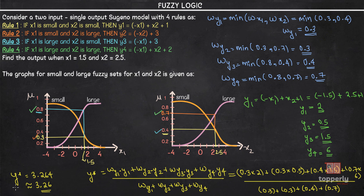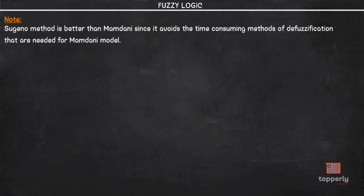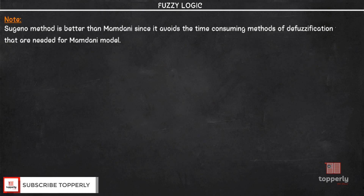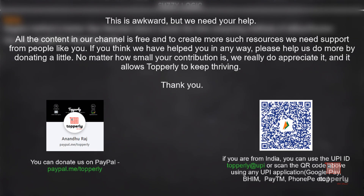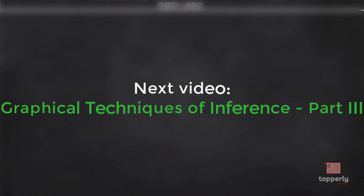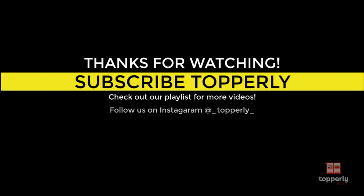So y* ≈ 3.26 is our defuzzified value using the weighted average defuzzification method. This is how you solve a simple Sugeno model. An important note: the Sugeno method is much better than Mamdani since it avoids the time-consuming defuzzification methods required for Mamdani — we can directly apply the weighted average method. In the next lecture we'll cover the last graphical inference technique, the Tsukamoto model. Thank you for watching and have a great day!